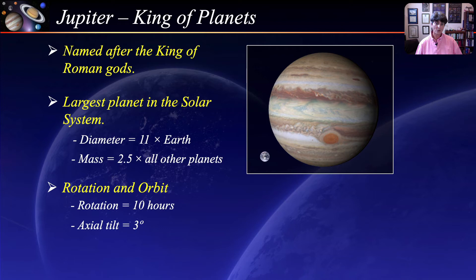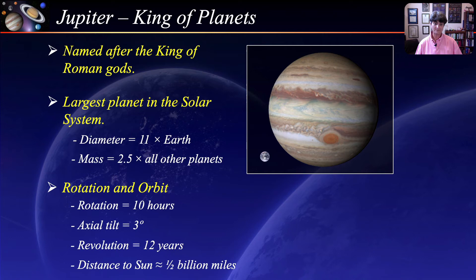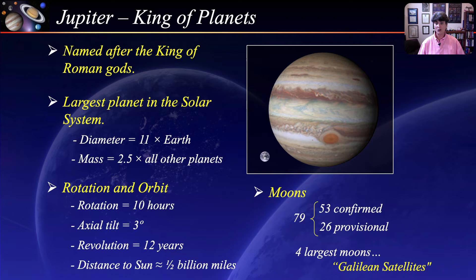Jupiter makes one complete orbit around the Sun in about 12 Earth years, with an average distance to the Sun of about half a billion miles. To date, Jupiter has 79 moons — 53 confirmed and 26 provisional. The four largest moons are called the Galilean satellites in honor of Galileo, who discovered them in 1610.